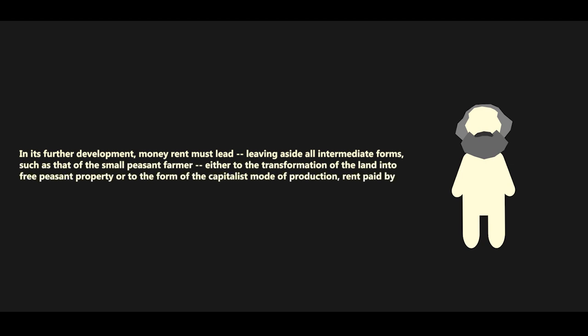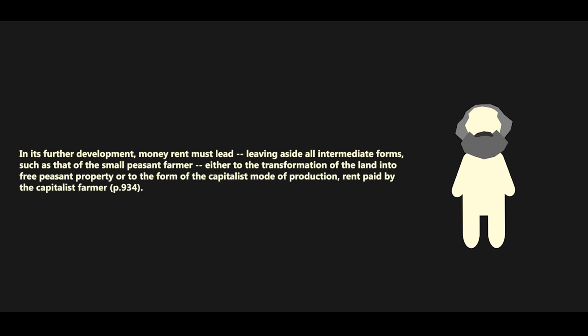Marx discusses money-rent later in Volume 3 with precisely the same implications as his analysis of trade. In its further development, money-rent must lead, leaving aside all intermediate forms such as that of the small peasant farmer, either to the transformation of the land into free peasant property or to the form of the capitalist mode of production, rent paid by the capitalist farmer. This echoes the first passage on rent we examined in chapter 36, where a component of the current mode of production comes into conflict with other components, producing a tension and a shifting balance that sets the stage for systemic alteration. Here, again we are faced with a contingency of transition, suggesting that even where these tensions coagulate, they are in themselves not sufficient to carry forward a systemic transformation.